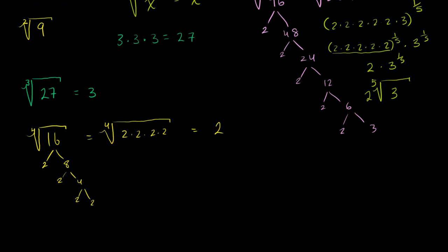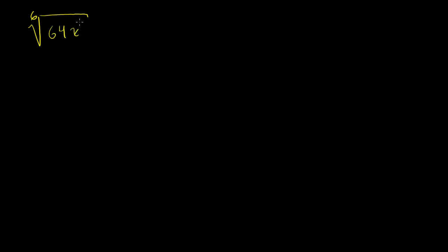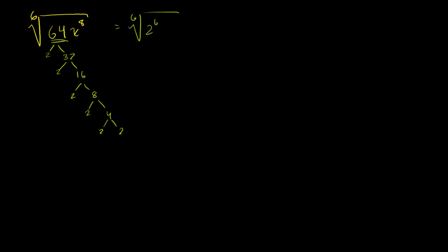Let's try another one with variables. Let's simplify the sixth root of 64 times x to the eighth. For 64: 64 is 2 times 32, which is 2 times 16, which is 2 times 8, which is 2 times 4, which is 2 times 2 — so that's six 2's, meaning 64 is 2 to the sixth power. So this is equivalent to the sixth root of 2 to the sixth times x to the eighth. The sixth root of 2 to the sixth is just 2, giving us 2 times the sixth root of x to the eighth.